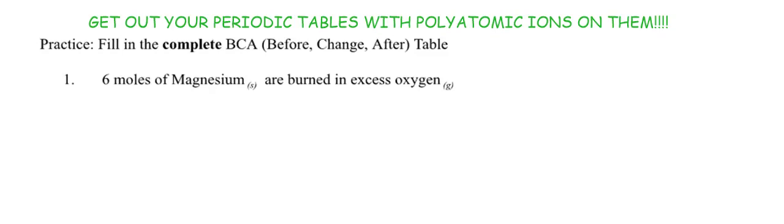Hey, ChemStars, this is Mrs. Vanoi bringing you another stoichiometry lesson. We are still in section 9.2, and this is going to be your second video for 9.2. We left off in the first video where we taught you what a BCA table was — before, change, and after. We learned how to do a mole ratio: divide by what you have and then multiply by what you want. So we're going to fill in complete BCA tables.